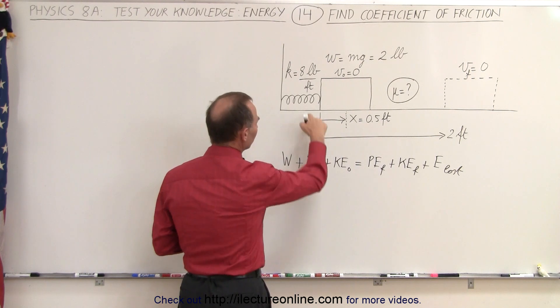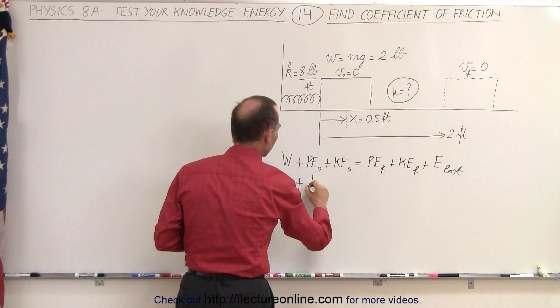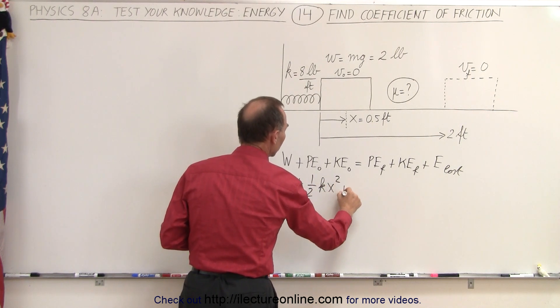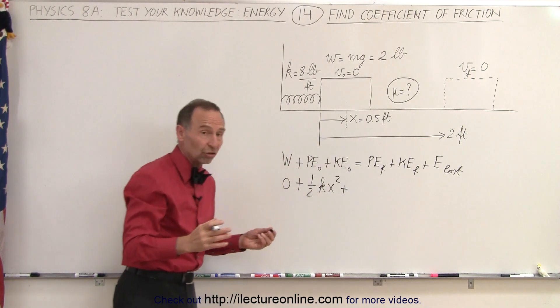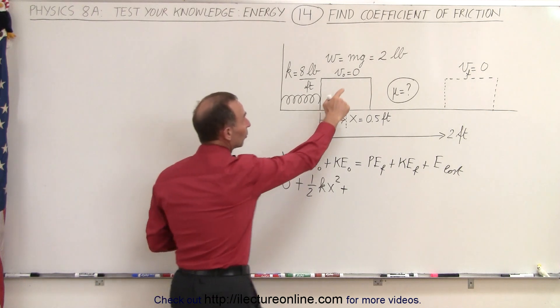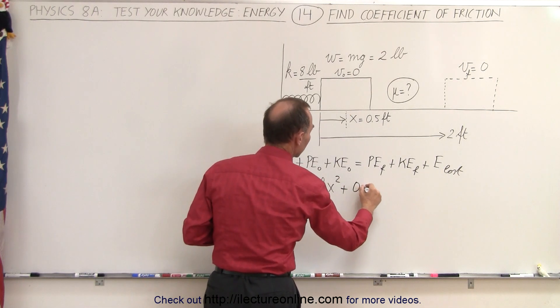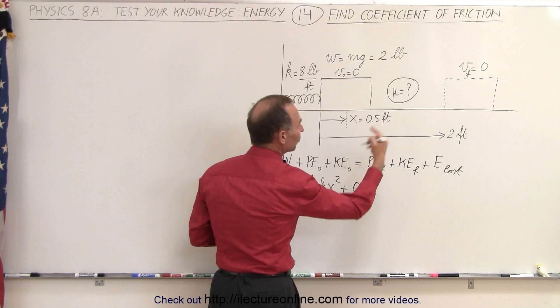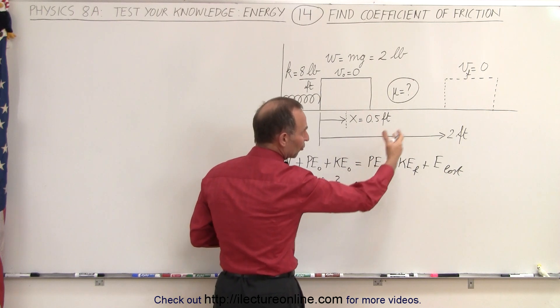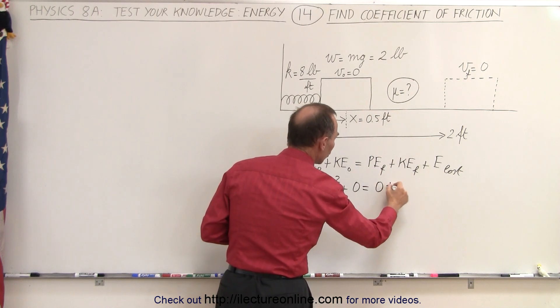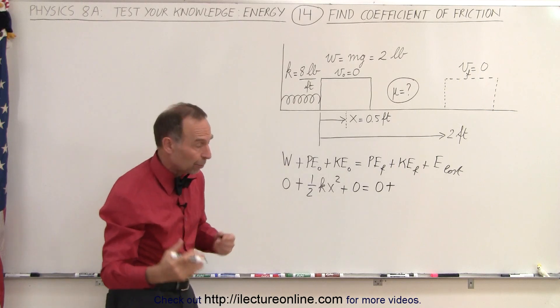The original potential energy would be the energy stored in the spring which is one half kx squared. There is no kinetic energy at the start because the block is not moving. The original velocity is zero. The final potential energy must be zero. There's no spring compressed. There's no height gained. There's no kinetic energy because the block is not moving at the end.